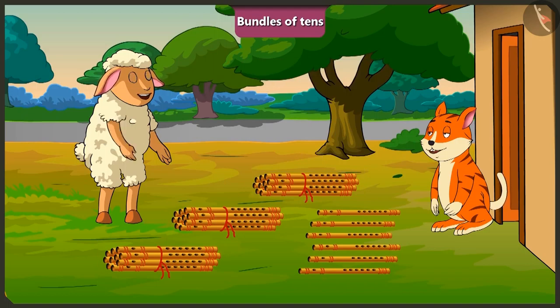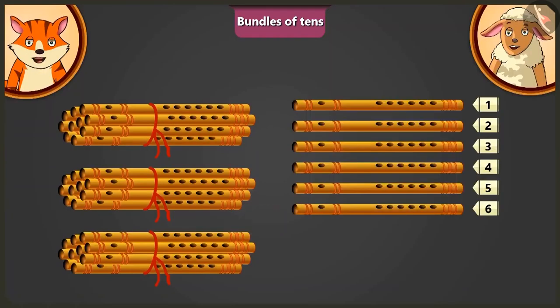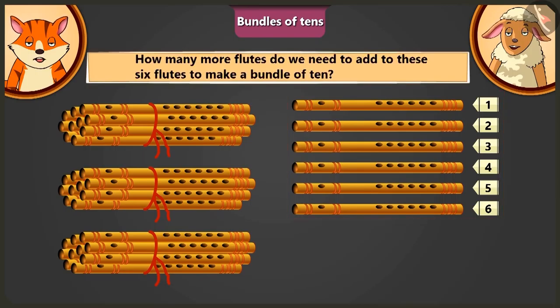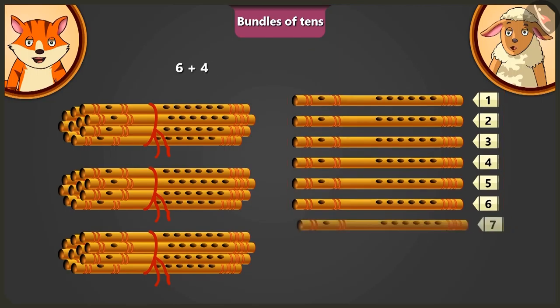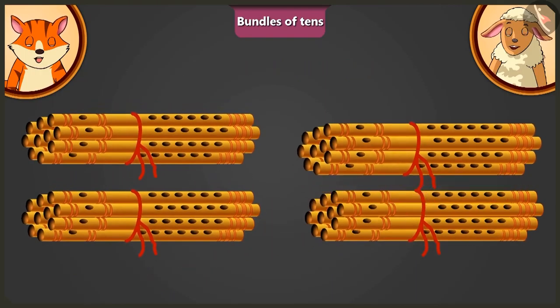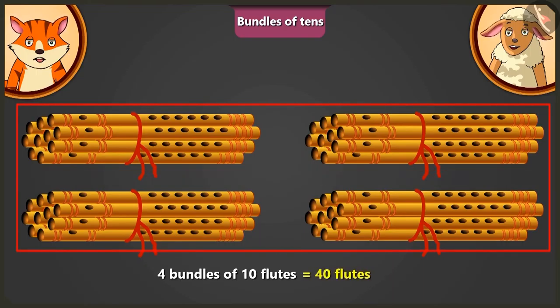Pili, now tell me, how many flutes are there in all? There are 30 and 6 — total 36 flutes. Come Lily, now tell me, adding how many flutes to these 6 flutes will make 1 bundle of 10? Adding 4 flutes to 6 flutes will make 1 bundle of 10 flutes. Yes, now here we have 4 bundles of 10 flutes each, that means there are total 40 flutes.